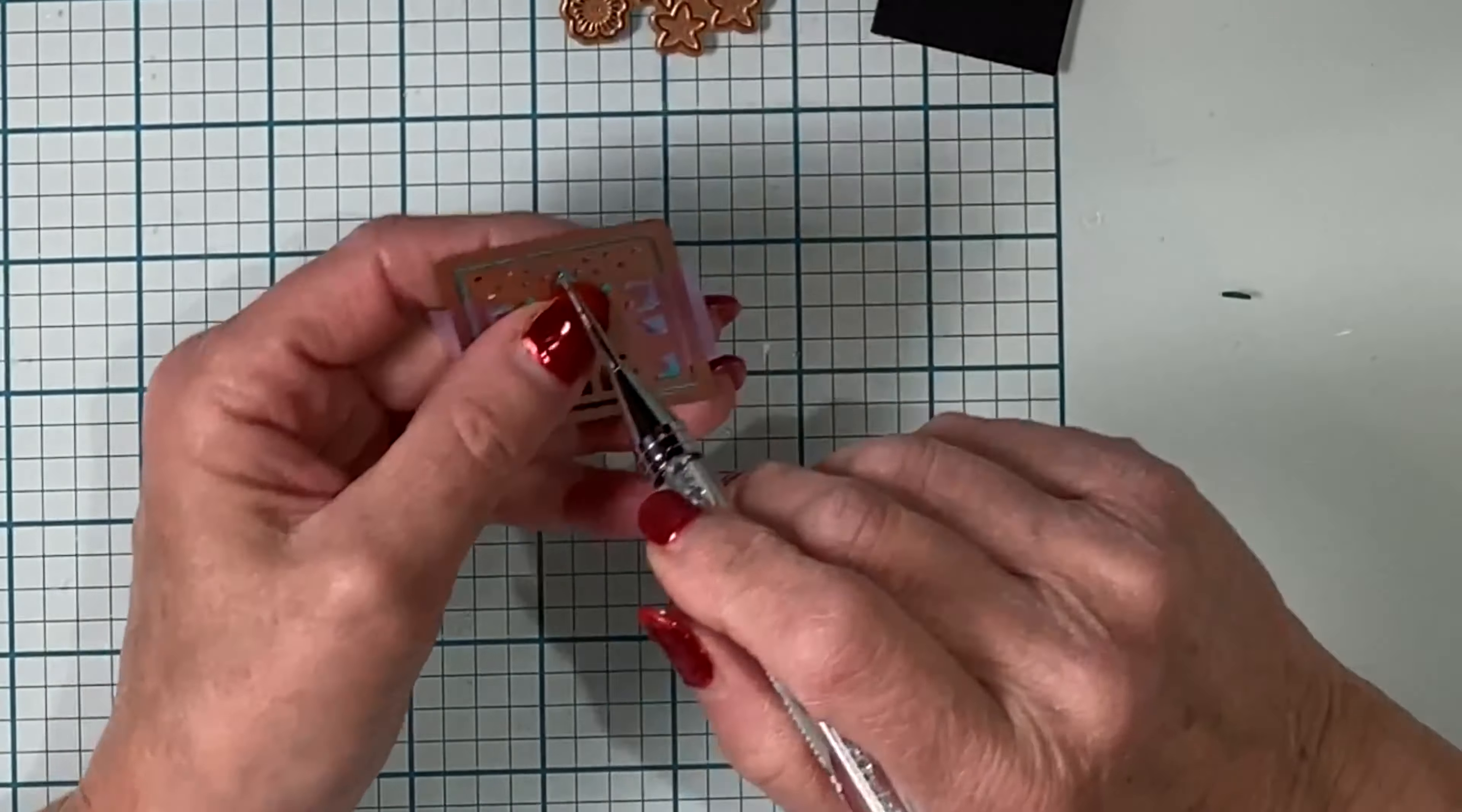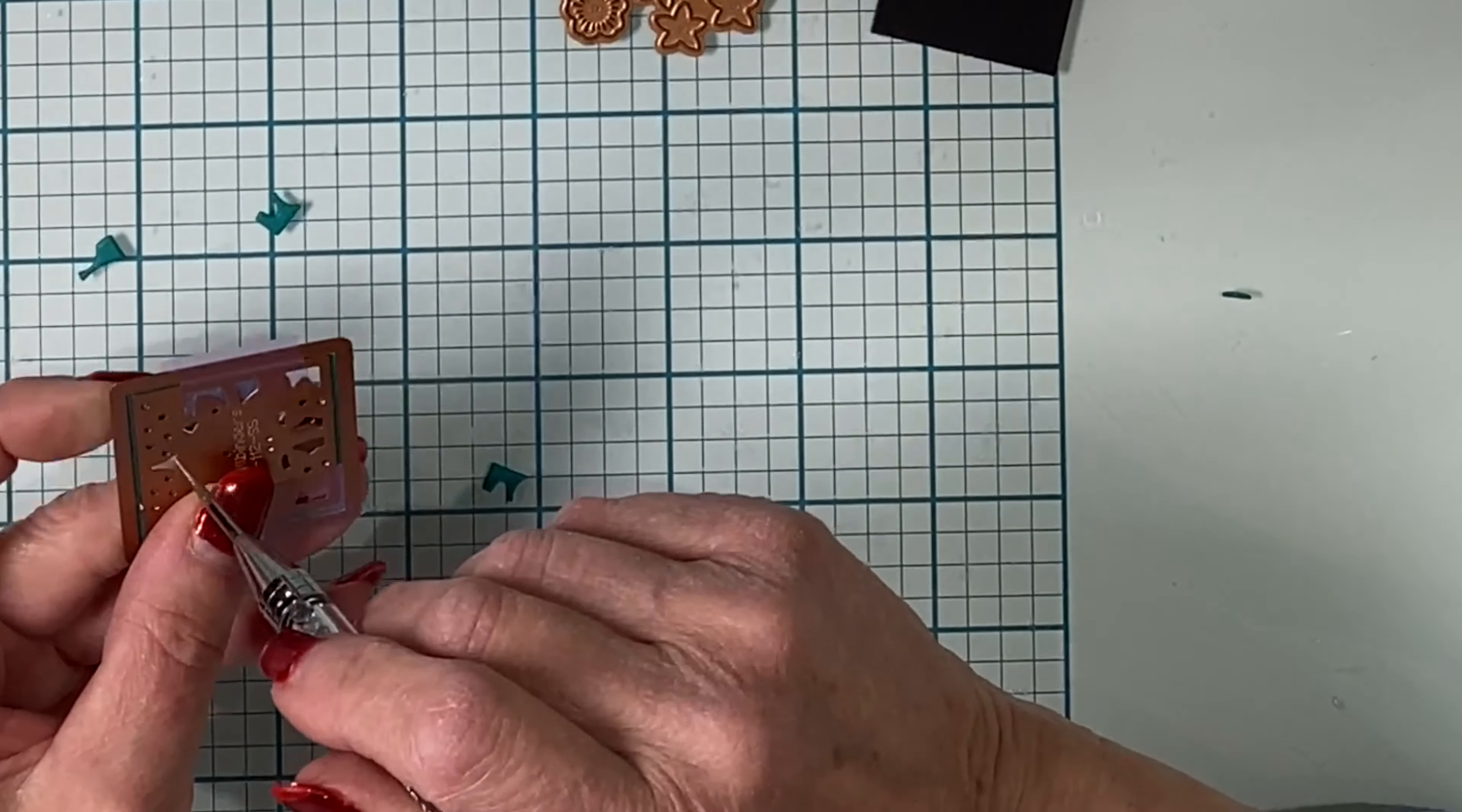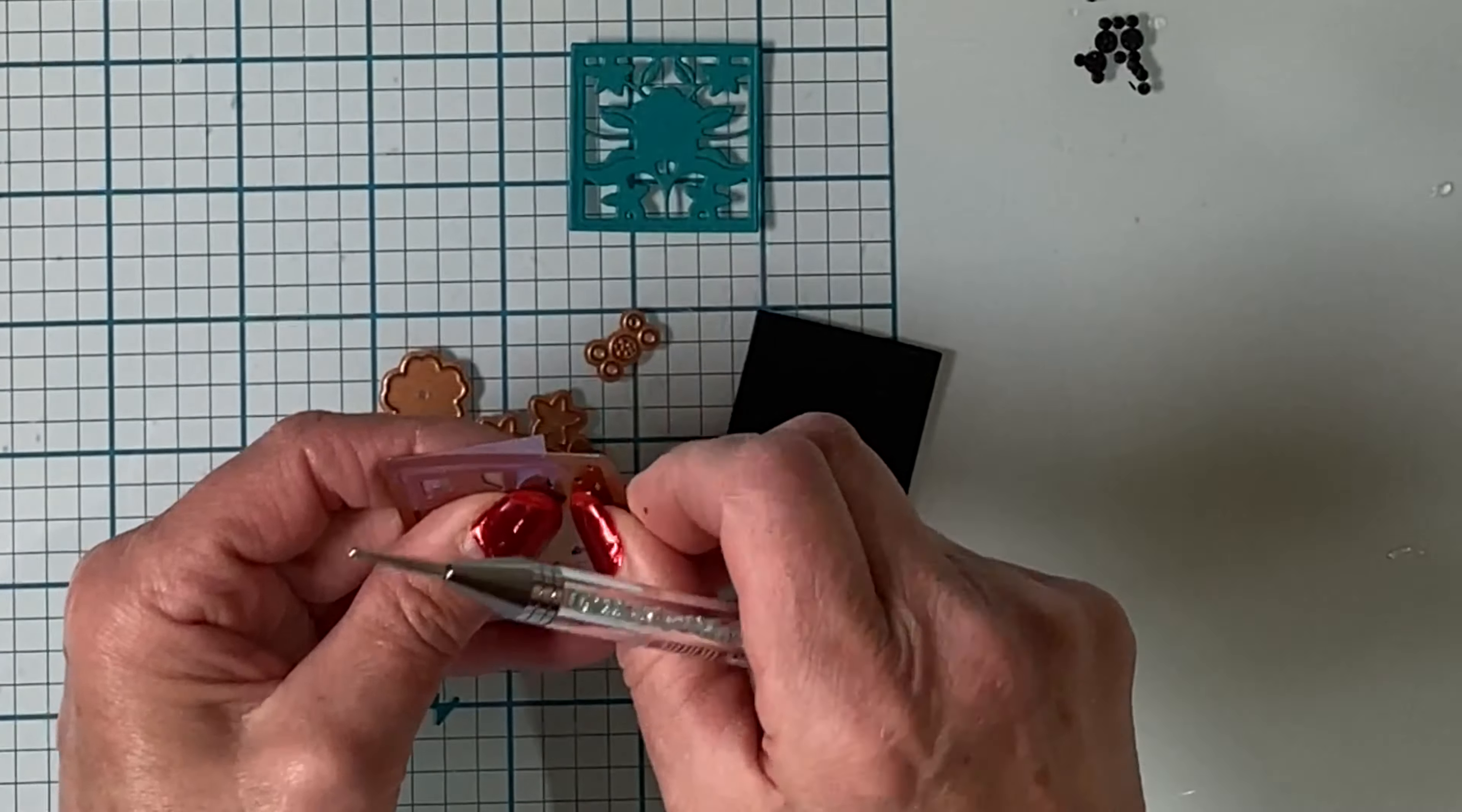Today's die set was used to create three tiles. The detailed insert die was taped in the center of the square outline die. Teal cardstock was die cut three times.